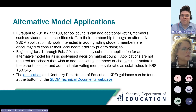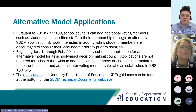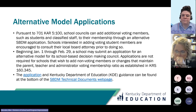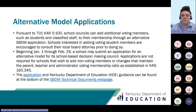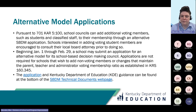Per regulation, councils can add additional voting members to their council so long as that model is approved by the Kentucky Board of Education through an alternative SBDM application. Until February 29th, a school can submit an application for an alternative SBDM model. Applications are not required for the addition of non-voting members or changes that maintain the proportions outlined in KRS 160-345. You can find KDE guidance as well as the application at the bottom of the SBDM technical documents webpage.